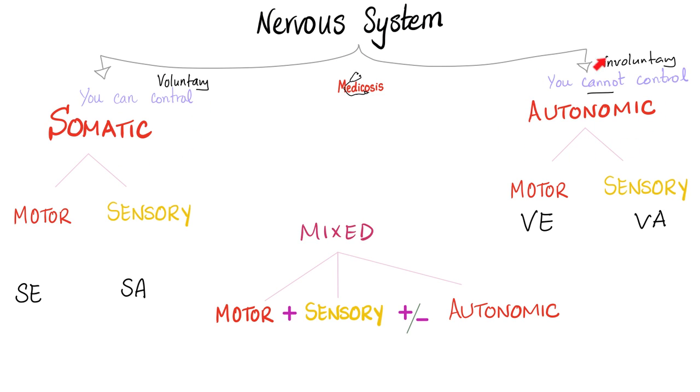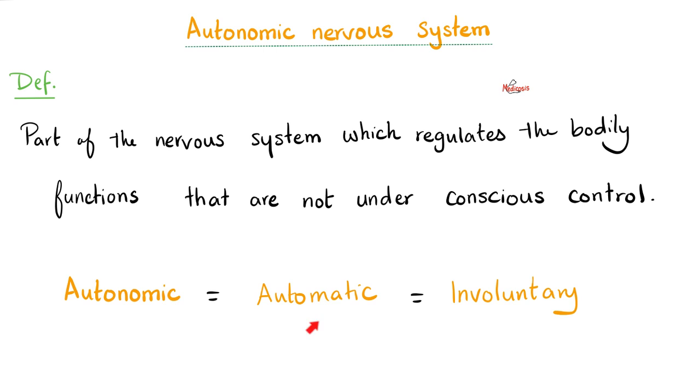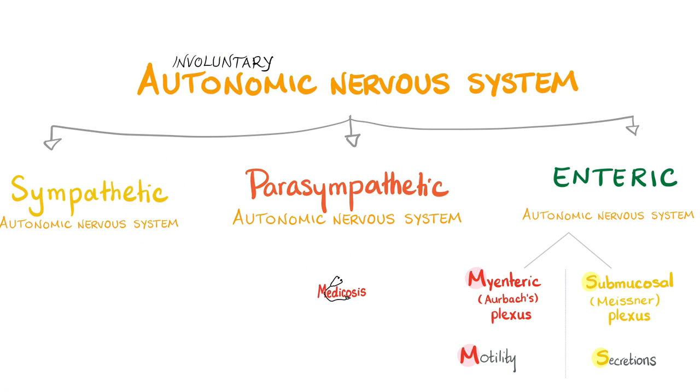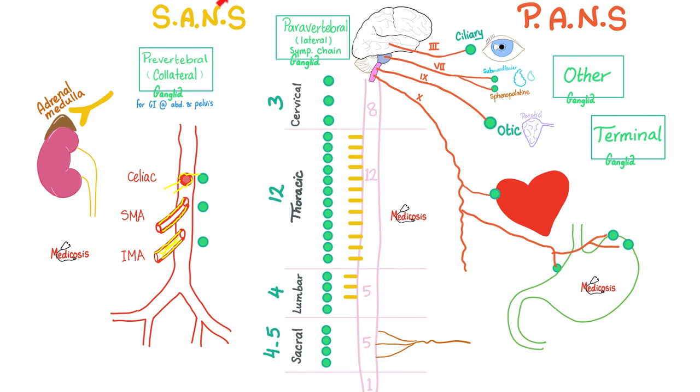For your gut, do you need autonomic or somatic? I need autonomic. Autonomic means automatic, which means involuntary. Autonomic is not just sympathetic and parasympathetic. It also includes the enteric nervous system, such as the myenteric for motility and the submucosal for secretion. Autonomic nervous system: sympathetic, parasympathetic, and enteric.